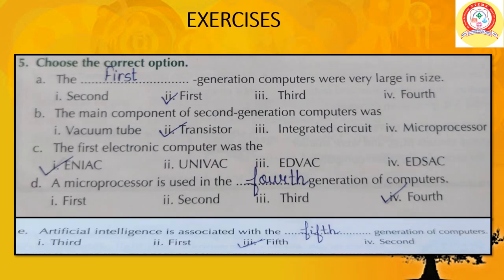Choose the correct option. A: The dash generation computers were very large in size — answer: First generation. The first generation computers were very large in size. B: The main component of second generation computers was — answer: Transistor.